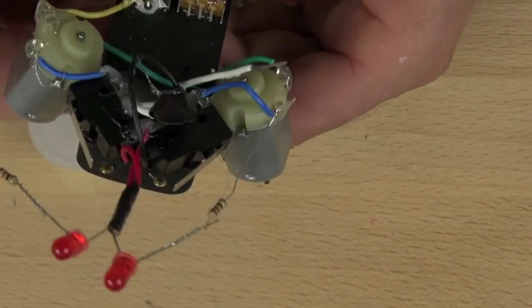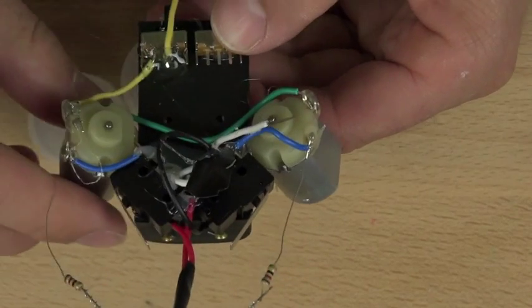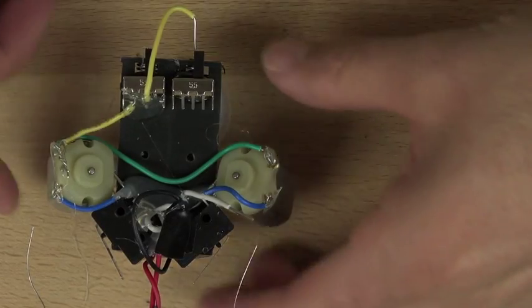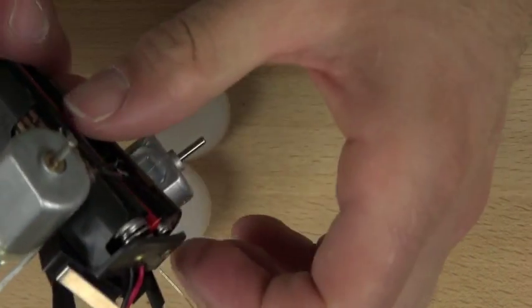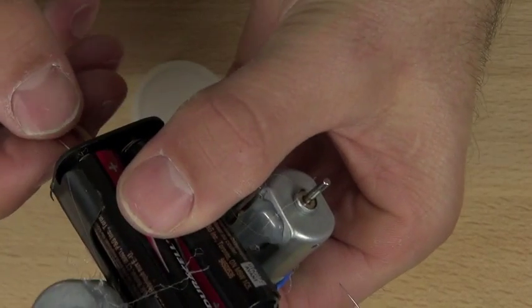So once that hot glue has turned that milky color and has cooled down, we will connect the wire to the battery in the back. So the hot glue is cool, we're going to go ahead and pop our battery back out of the holder.